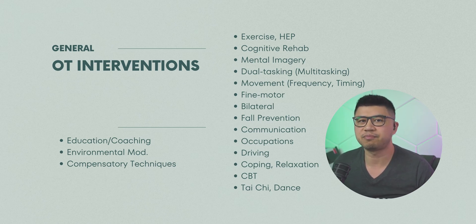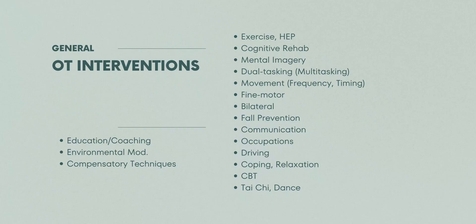For PD, promote ADLs, IADLs, leisure, social participation, and work. Promote lifestyle changes, mental health, sexual participation, and driving. Mentally, you can incorporate coping strategies, relaxation, or CBT. One example of a great intervention is tai chi or dance, as it involves cognition, memory, attention, executive function, language, sensory, and motor skills. PAMs such as heat can also be used. Don't forget to address pain and spasticity, such as using antispasticity splints. Group interventions may also be helpful, as they can provide support to these clients.